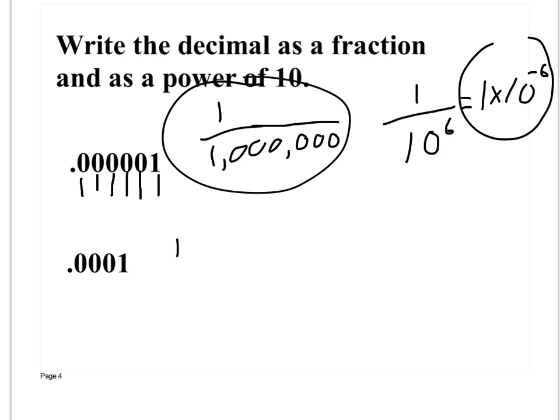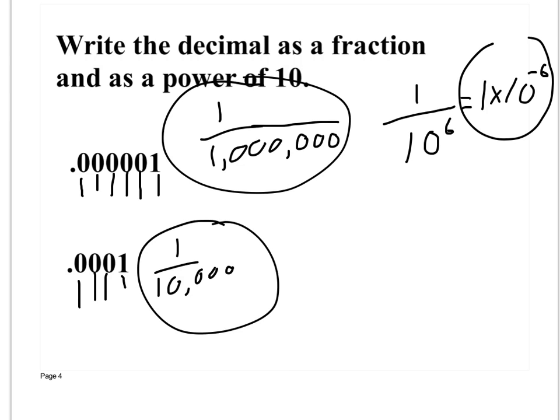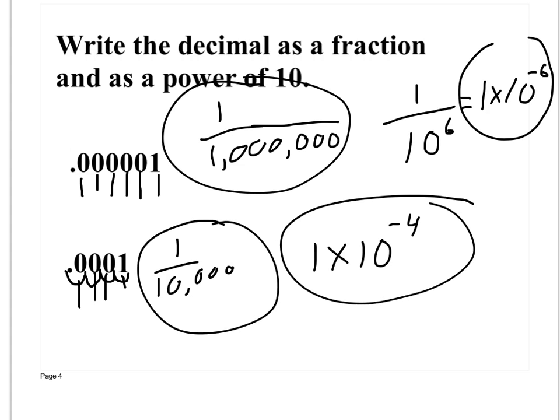Let's do this one: 1 over what? This is the 10,000th place, so it's 1 over 10,000. Now I know this is going to be 1 times 10 to the what power? Like in scientific notation, you count how many decimal places you moved: 1, 2, 3, 4 — we moved it 4 times. Since you've made a small number larger, it's a negative exponent: 10 to the negative 4.